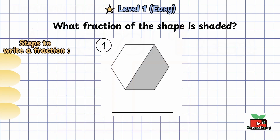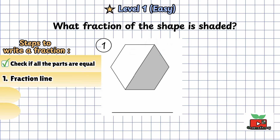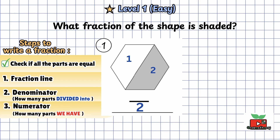Question 1: what fraction of the shape is shaded? Here are the steps to write our fraction. Most importantly, check if all the parts are equal. In this shape, the two parts are equal. Step 1: draw the fraction line. Step 2: write the denominator, the bottom number. The shape is divided into 1, 2 — 2 equal parts — so we write 2 at the bottom. Step 3: write the numerator, the top number. One part is shaded, so we write 1 on top. So the fraction is 1 over 2, or one half of the shape is shaded.